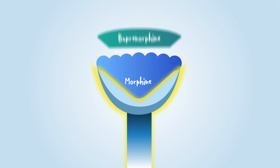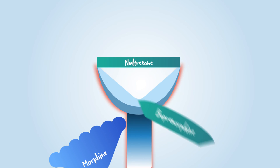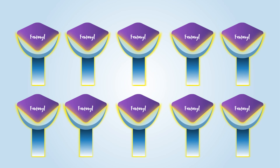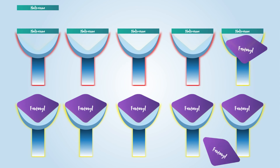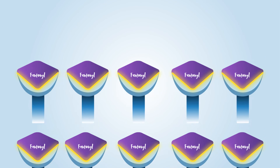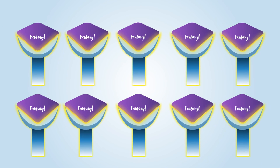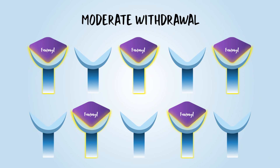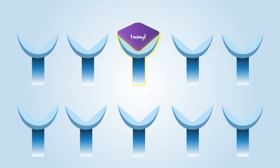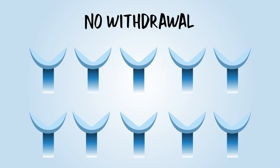Both buprenorphine and naltrexone will displace full opioid agonists from the receptor. If taken too soon, buprenorphine and naltrexone can precipitate withdrawal because, compared to full agonist opioids, these medications result in less or no activation at the mu opioid receptor. To avoid worsening opioid withdrawal symptoms, buprenorphine should only be administered when moderate withdrawal symptoms are present. Naltrexone should only be administered after complete opioid withdrawal, typically 7 to 10 days after last opioid use.